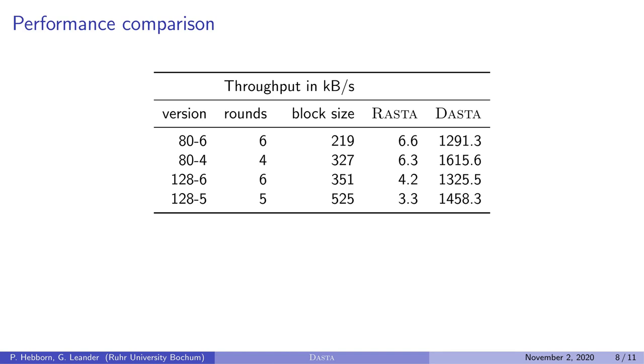We implemented the keystream generation for RASTA and DASTA for 80 and 128-bit security levels. And the block sizes are for both ciphers the same. The block size is basically a trade-off between AND and XOR operations. The higher the block size, the less rounds we need. And the number of rounds is equal to the number of ANDs per bit. And the number of XOR operations is quadratic in the block size. So if we have a small block size, we have less XOR operations, but we need more AND operations. DASTA performs about 200 to 400 times better.